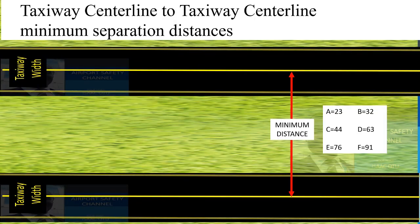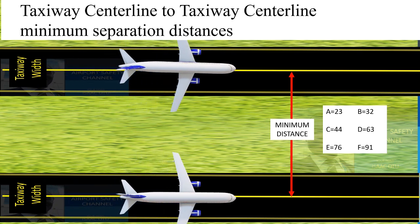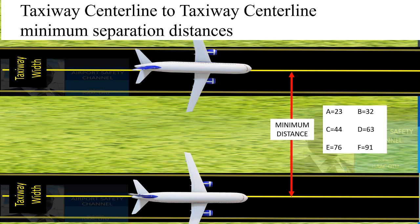Now let's look at taxiway centerline to taxiway centerline minimum separation distances. Unlike runways, where code numbers are used, taxiway to taxiway centerline separation requires reference only to the aircraft code letter. These letters represent the maximum wingspan of the critical aircraft for which the taxiway has been designed. Our aim is to ensure that the minimum separation is achieved between the wingtips of aircraft operating on the taxiway and the adjacent or parallel taxiway. It is very important to ensure that these minimum distances are maintained to prevent wingtip collision.